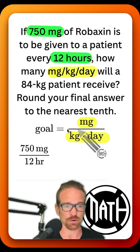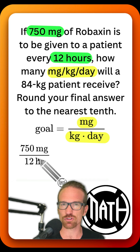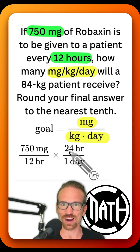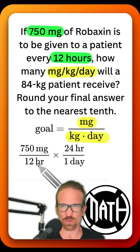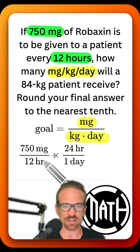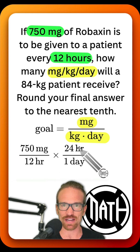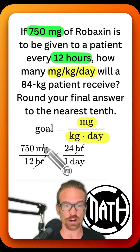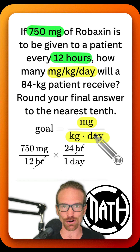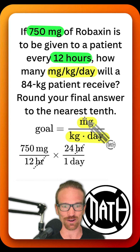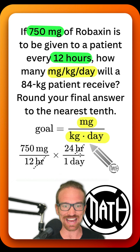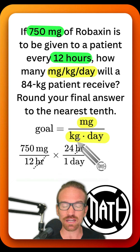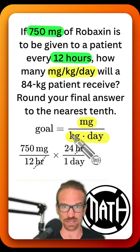We need to get rid of hours because that's not part of our goal — we need day at the bottom. Isn't there a conversion we can use? Aren't there 24 hours in one day? By putting hours at the top of the next fraction, the hours cancel out. Now we have milligrams per day, and that is part of our goal.